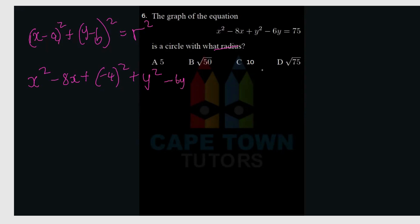Then we take y squared minus 6y. We take the coefficient 6, multiply by one half to get 3, and remember it's negative 3 because it's negative 6 divided by 2. So we add negative 3 squared.